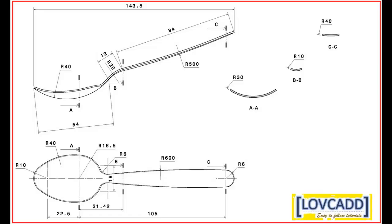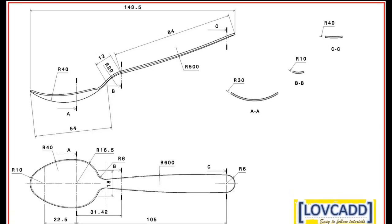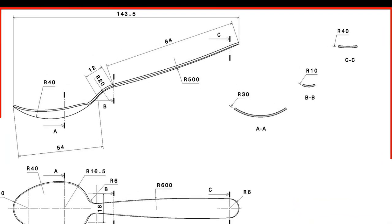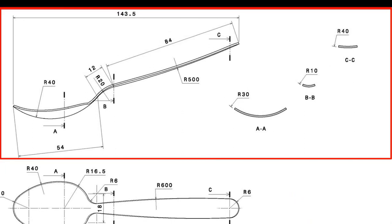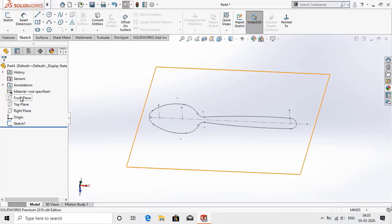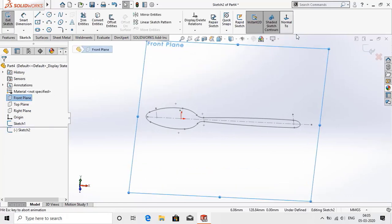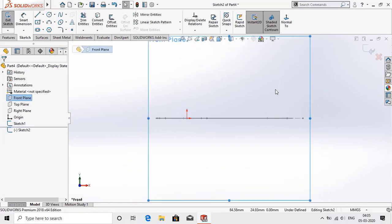Now we are going to deal with curves on the front view and sections of the teaspoon as shown in this drawing. For this, go to front view, sketch, normal.